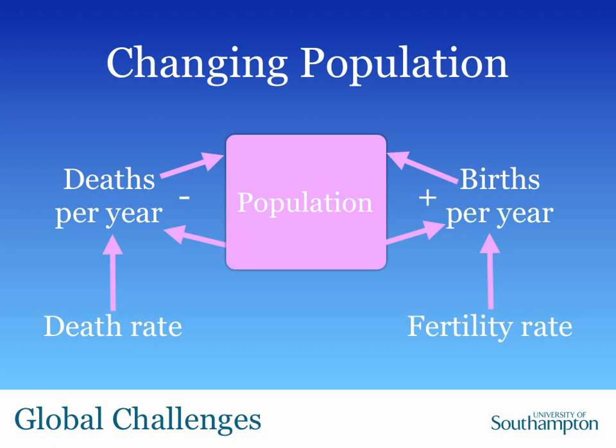This is actually a system dynamics perspective on population growth. In the middle you've got population — some number of individuals — and that will decrease and increase corresponding to two simple processes: how many people die per year, a decreasing process, and how many births per year, an increasing process. For a fixed population, deaths per year change as a function of the death rate, and births per year change as a function of the fertility rate. As people live longer, or as fertility rate goes up or down, these two processes affect whether there's a decrease or increase in total population.